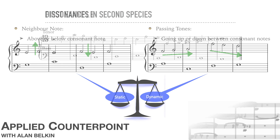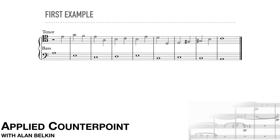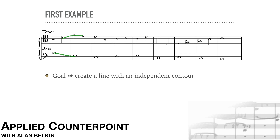Here's our first example of second species counterpoint. This melody uses one neighbor note in the fourth bar and passing notes in the second bar and the third bar from the end. The other half notes in mid-bar are all leaps to and from consonances. As in the first species, leaps allow the melody to open up new registers, avoiding getting stuck. The goal is to create a line with an independent contour and with a good balance of stepwise motion and leaps.